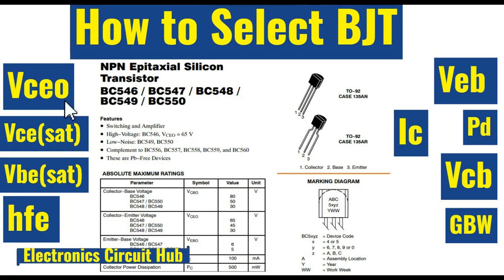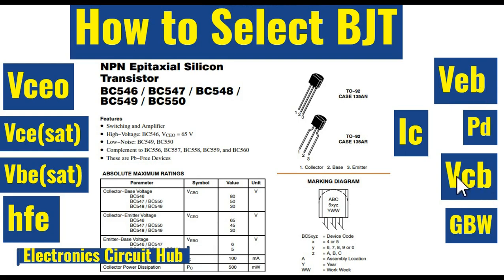The next parameter you need to look into is VEB — that means emitter-to-base voltage when the collector is open. You can see here this VEB when the collector is open. Another parameter you need to look into is VCB — that is collector-to-base voltage when the emitter is open.